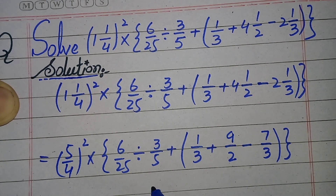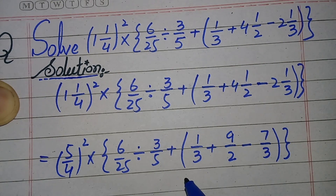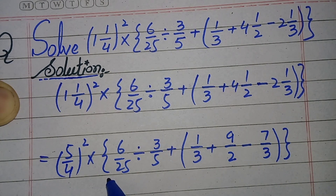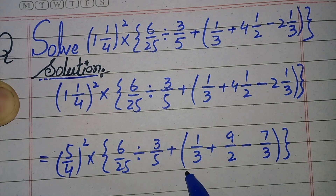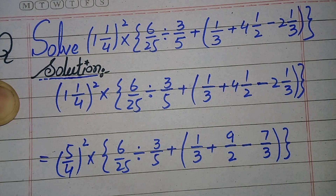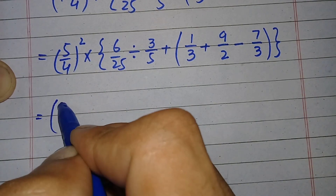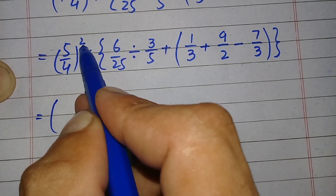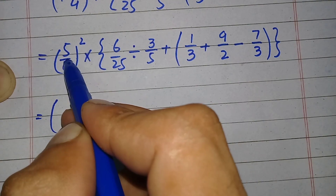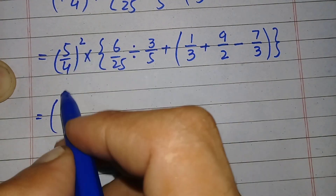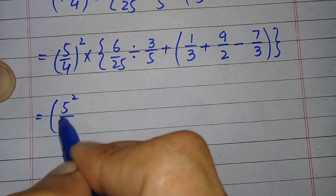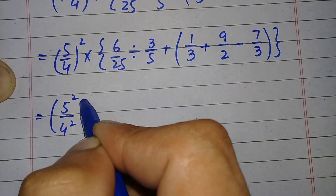Now in the next step we will apply the BODMAS rule. According to BODMAS rule, first of all we will simplify the brackets. There are two types of brackets: braces and parenthesis, so first we will solve the parenthesis. We will apply this power on both the numerator and denominator, so it becomes 5 raised to power 2 and 4 raised to power 2.